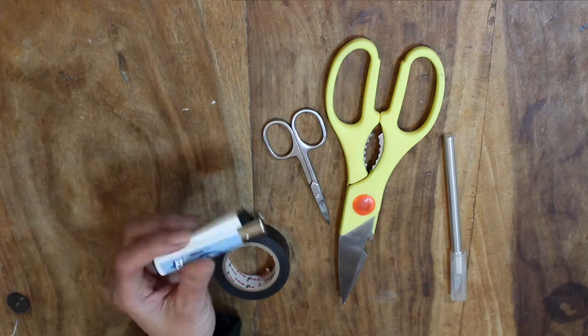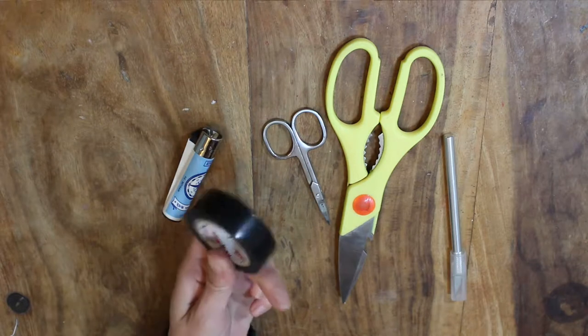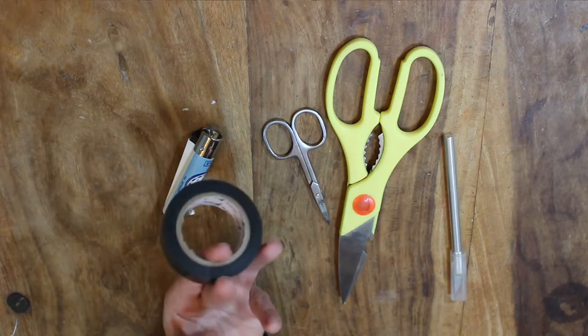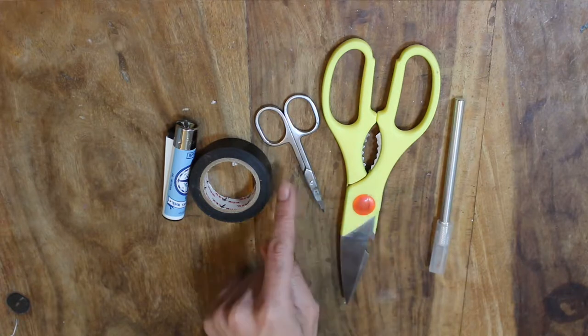You're going to need a lighter, a clipper style one, some black electrical tape, and some cutting devices like scissors or a scalpel. It's useful to have something small like nail scissors for the more fiddly bits.